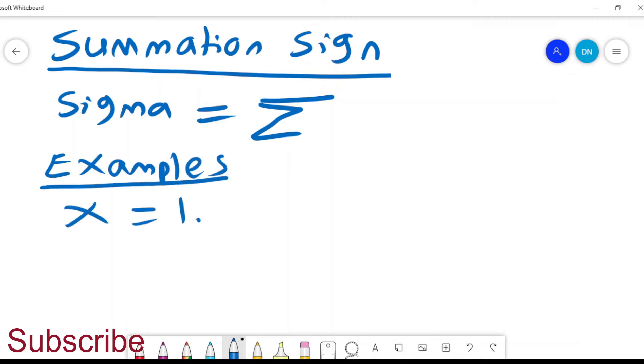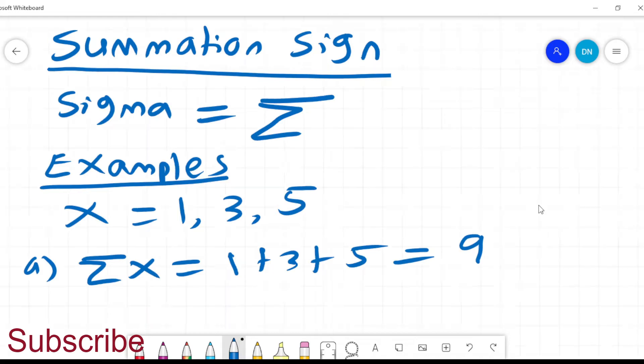We are told that x equals 1, 3, and 5. When someone says sum x, it basically means you need to add 1 plus 3 plus 5, and that will give you 9.